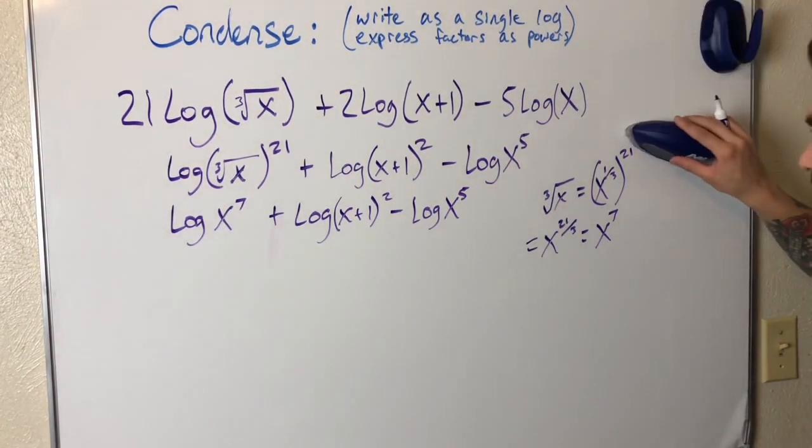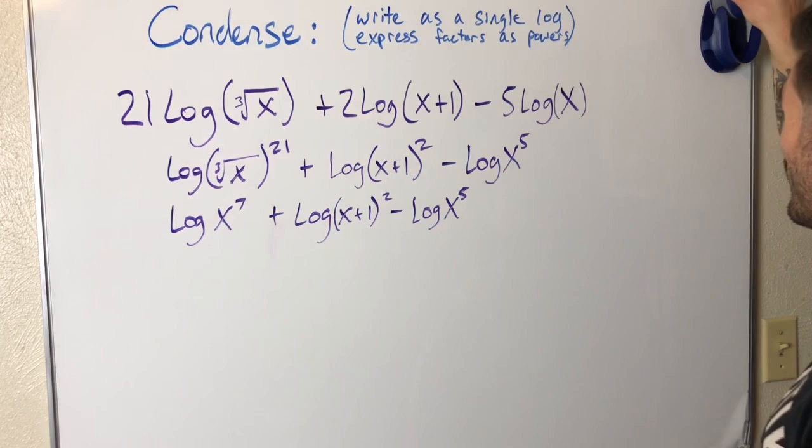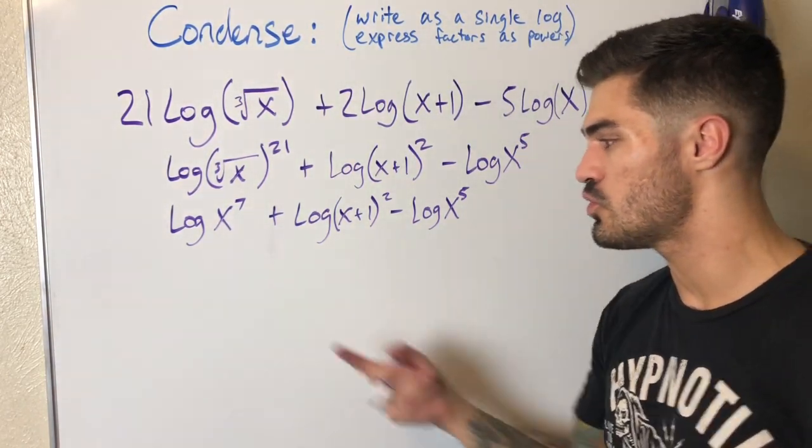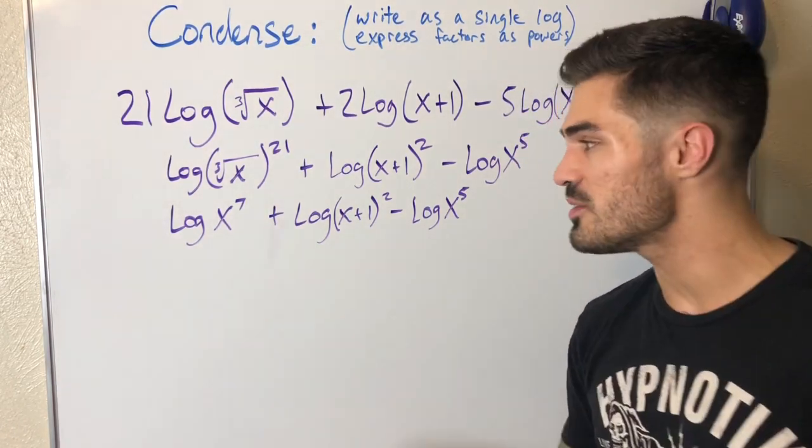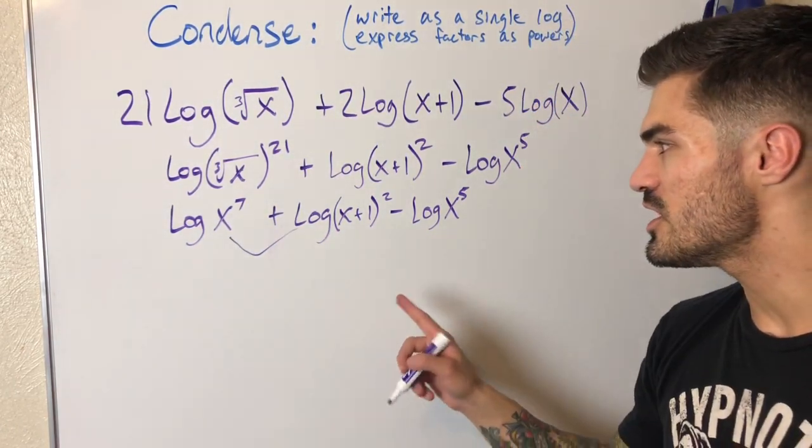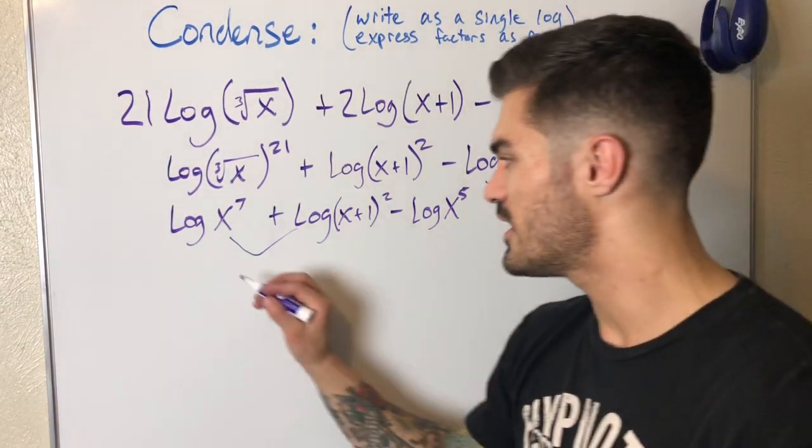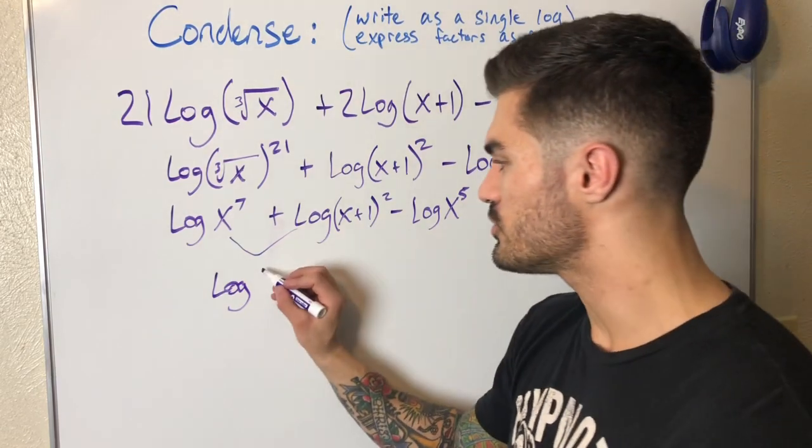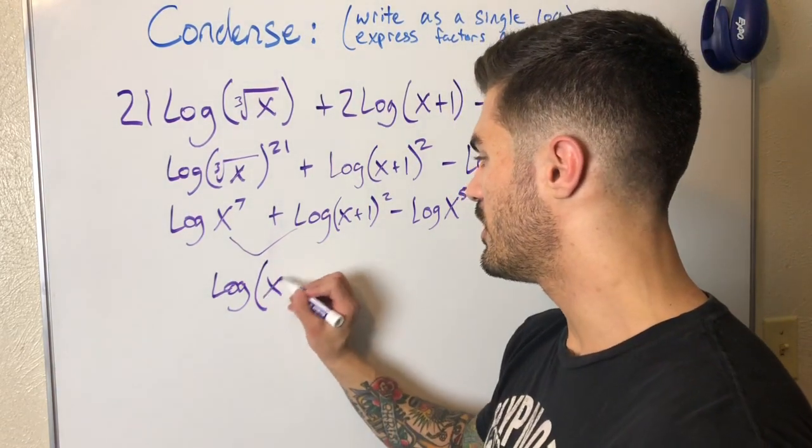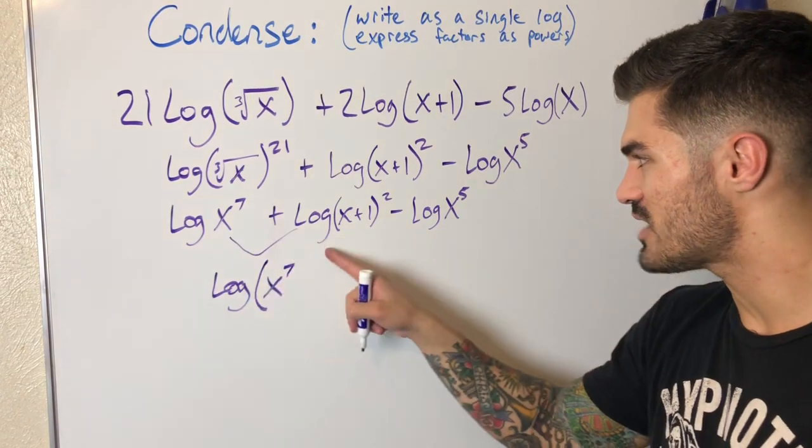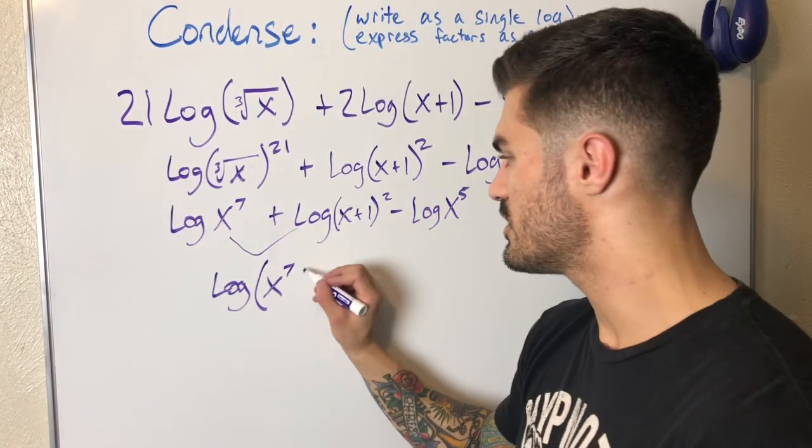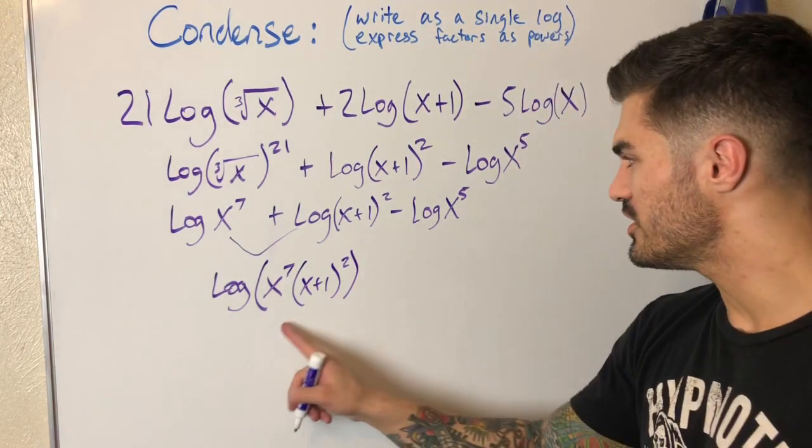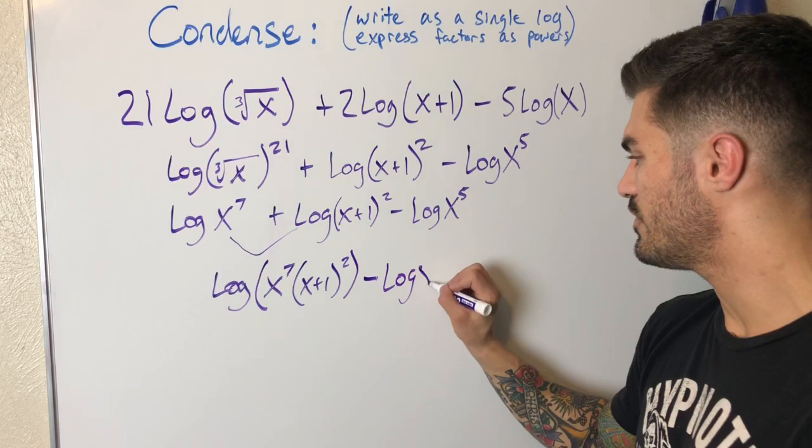I guess I could have erased instead of rewriting that whole thing. Sorry about that. All right, now we can start combining stuff. Again, I've moved from left to right, that's how I like to do it. And the biggest mistake I see students make is that they go from here to one log all together. Do it one step at a time. Combine these two, that's your first step, and then combine that with this. So now I have log, and since I have addition, what's going to happen? It's going to become multiplication. Right, I have log of x to the seventh times x plus one squared. That's all in this log minus log x to the fifth is still out here.